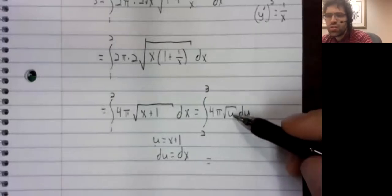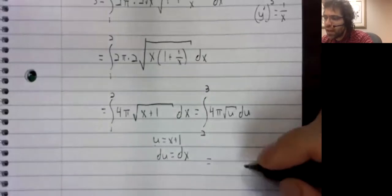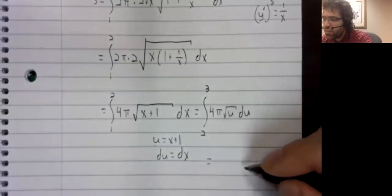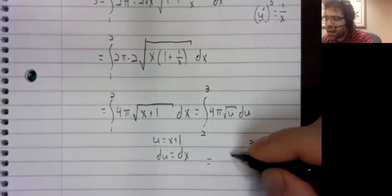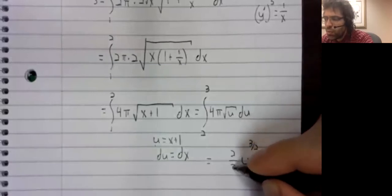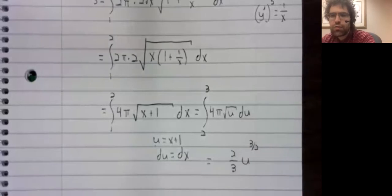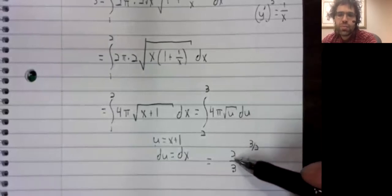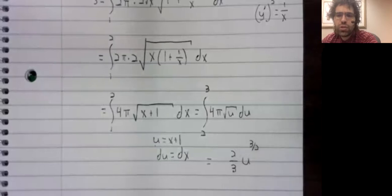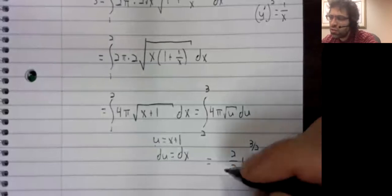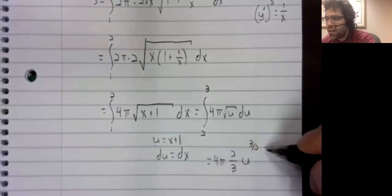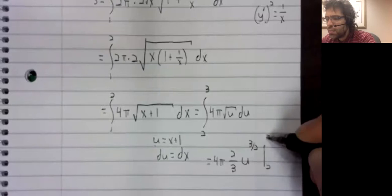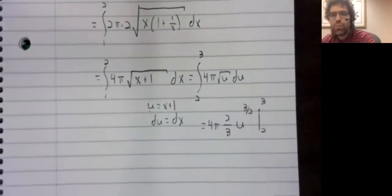So let's see, this is u to the one half. So we'll bump that up to three halves. But we'll divide by three halves, which is the same as multiplying by two thirds. And there's a four and a pi there as well.